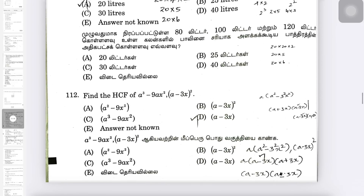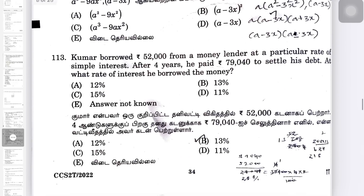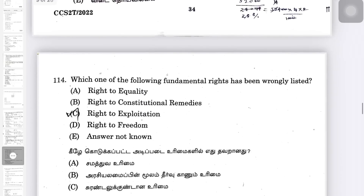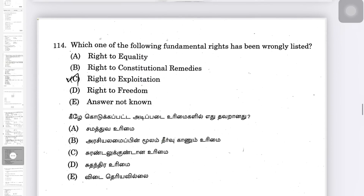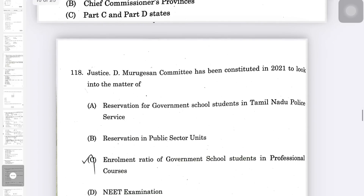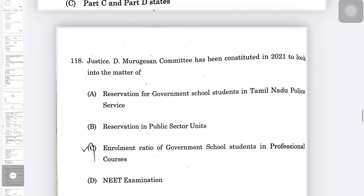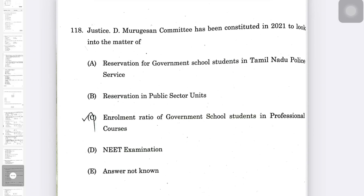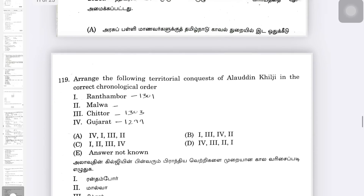A = 3x. Simple Interest question. Right to Exploitation, Against Exploitation. Enrollment ratio of government school students in professional courses — answer is C, A = 3x.